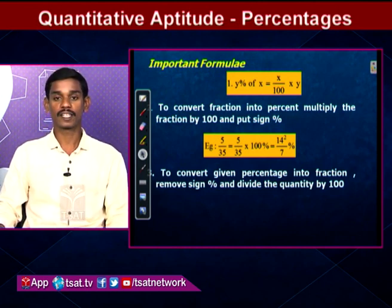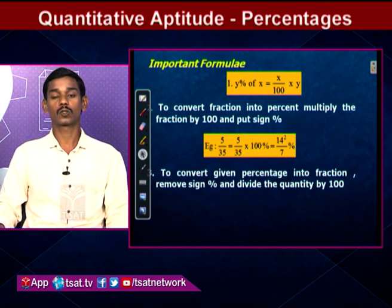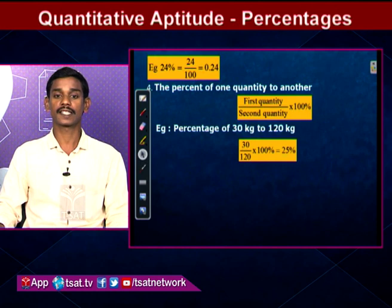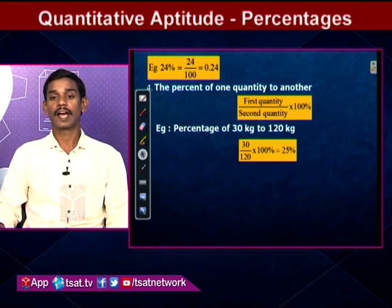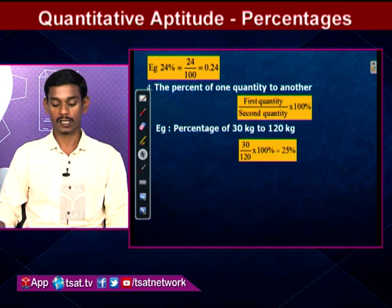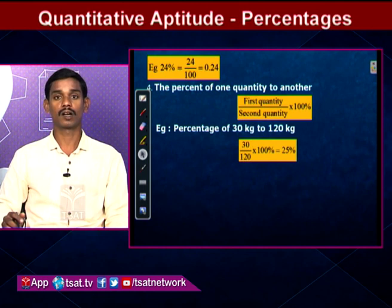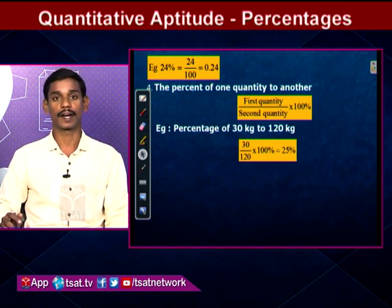Another important formula: to convert a percentage into a fraction, remove the percentage sign and divide the quantity by 100. Also, the percentage of one quantity relative to another equals the first quantity divided by the second quantity, multiplied by 100.